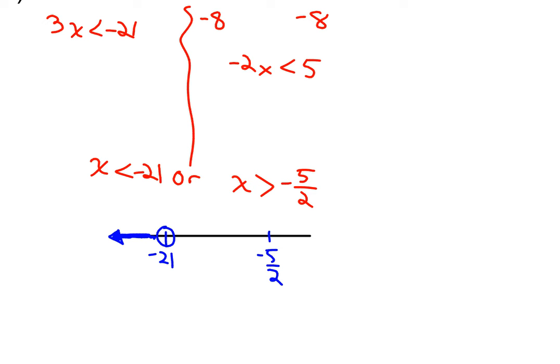For x is greater than negative 5 halves, that one is also exclusive, so empty circle but shade to the right. For an or compound inequality, I only need one of these shaded regions to be satisfied — if I pick a number from the left shaded region that's okay, or from the right shaded region that's okay. So this is my final answer: there are two shaded regions — less than negative 21, or greater than negative 5 halves.